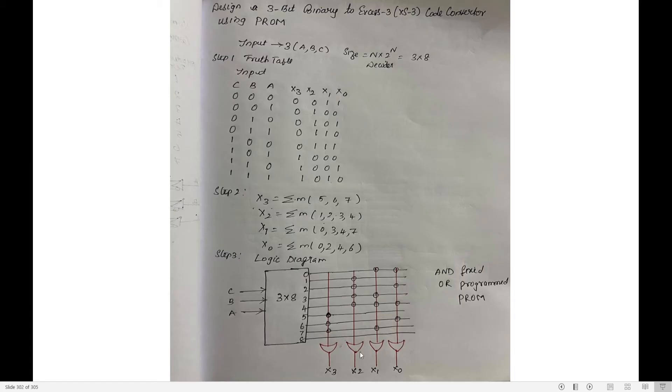Now you need to design the PROM. To design a PROM, you need to have a decoder. Take a 3-by-8 decoder with 3 inputs A, B, C and 8 outputs labeled 0 to 7. Draw a line for each output. X3 is the sum of min terms 5, 6, 7. Take an OR gate for X3 and at positions 5, 6, and 7 draw a star mark, indicating these three are connected to X3.